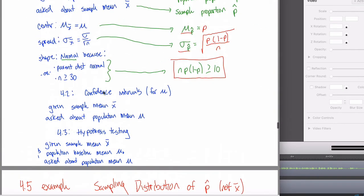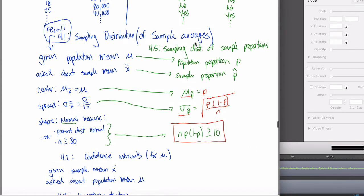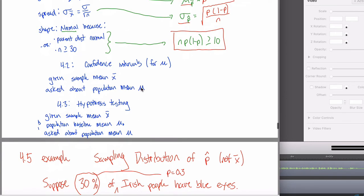With confidence intervals for mu, the idea was you don't know the population average mu — which makes sense, you generally don't know population parameters. But you do know the sample average x-bar. You can randomly select some people, collect sample data, and calculate a sample average. When you know x-bar, you can use sampling distributions to make predictions about mu. For example, because my sample average was 35, I'm 95% sure that my population average is between 34 and 36.